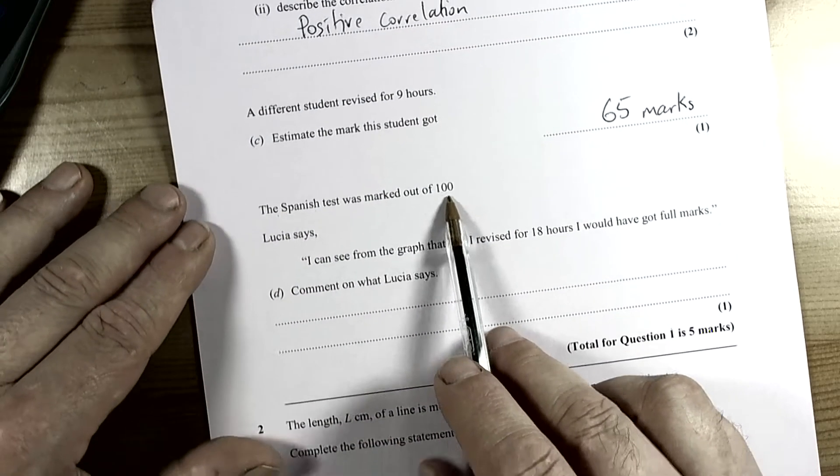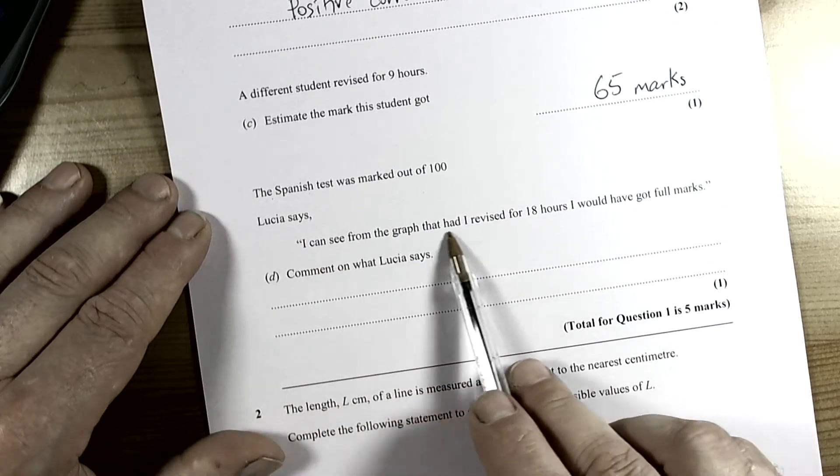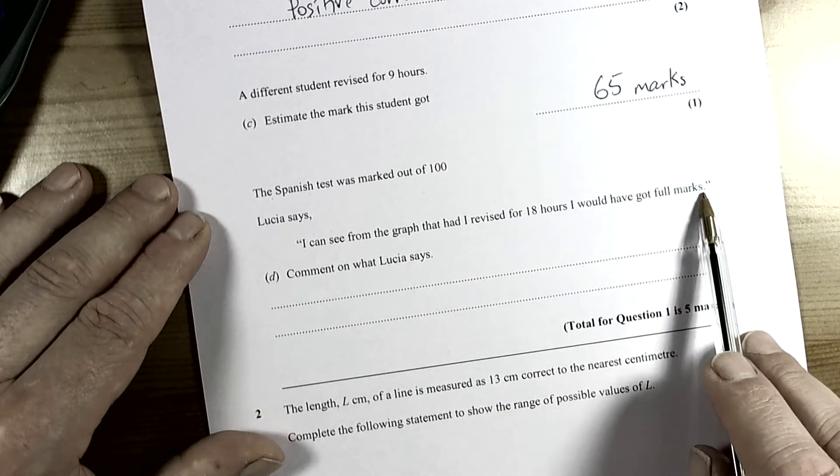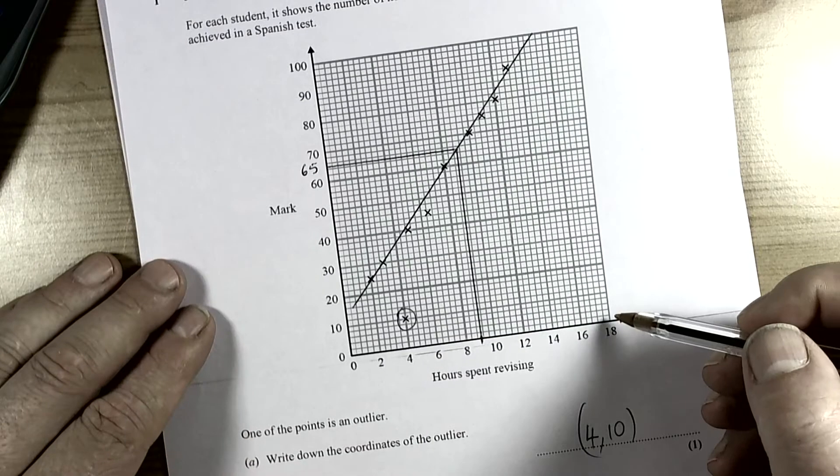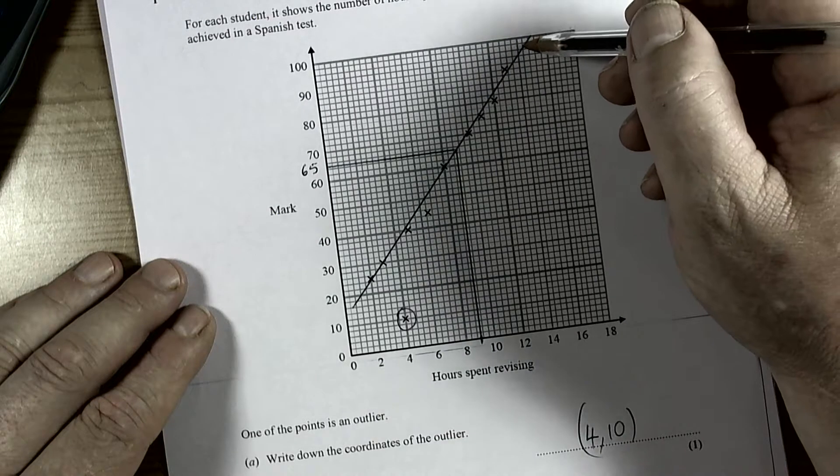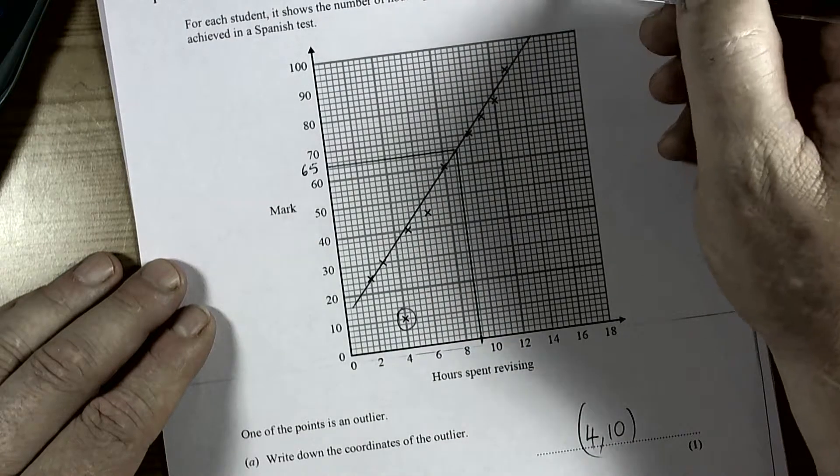The Spanish test was marked out of 100. Lucia says 'I can see from the graph that if I revised for 18 hours I would have got full marks.' Comment on what she said. Well, 18 hours is up here. The line would go further on.